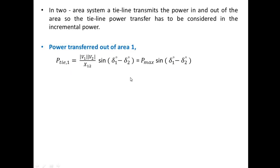In practice, we should not bring the voltage angle to 90°, because at that point the tie line loses its rigidness, or stiffness. To maintain the rigidity of tie line power, we always maintain the angle between 30° and 60°. This is an important practical constraint from the tie line power flow relation.